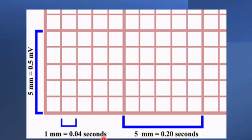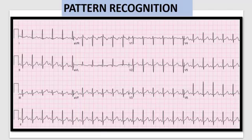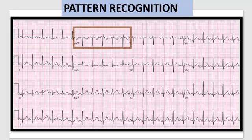Let's move on to pattern recognition. It is important to be aware of specific patterns in a normal ECG. We will start with lead AVR. All waves — P, Q, R, S, and T — are inverted in lead AVR. The reason being the electrical conduction is going in the opposite direction from this lead. If these waves are upright or positive, it means there has been misplacement of ECG leads during recording.